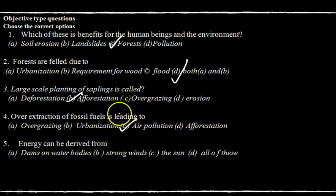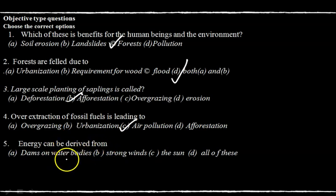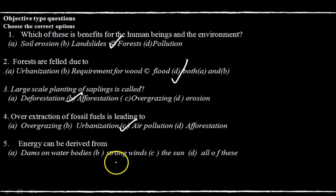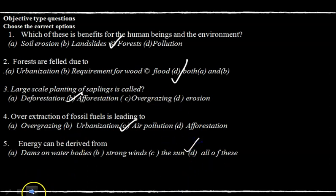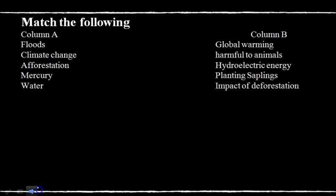Question number five: energy can be derived from dams on water bodies — this is correct. Strong winds — also correct. The sun — also correct. So option D, all of these, is the correct answer. Let's go to the next exercise.